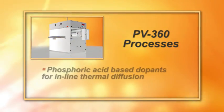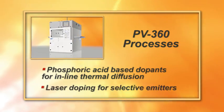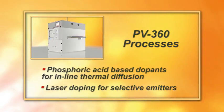The PV360 is used for phosphoric acid-based dopants for the in-line thermal diffusion process and the laser doping selective emitter process.